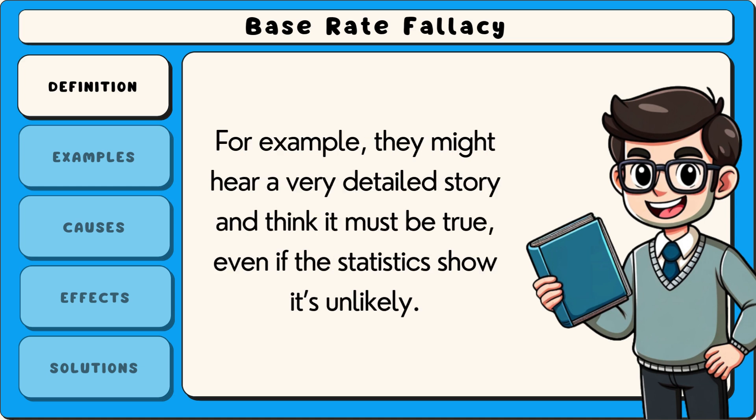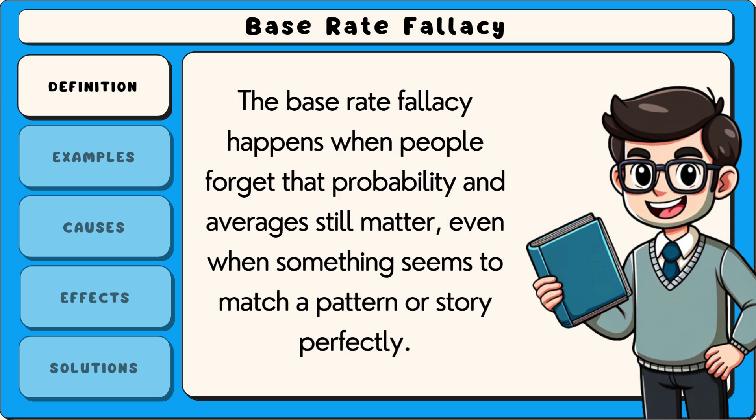For example, they might hear a very detailed story and think it must be true, even if the statistics show it's unlikely. The base rate fallacy happens when people forget that probability and averages still matter, even when something seems to match a pattern or story perfectly.